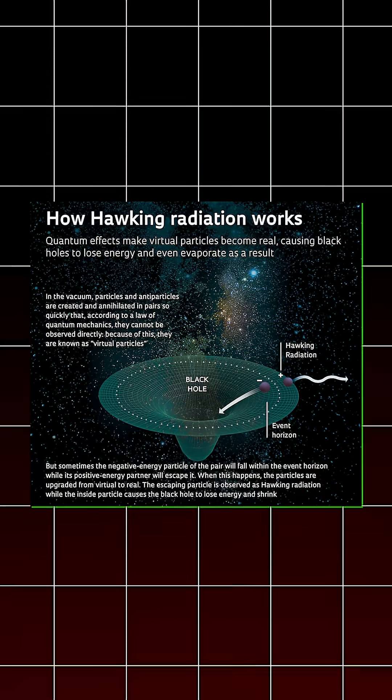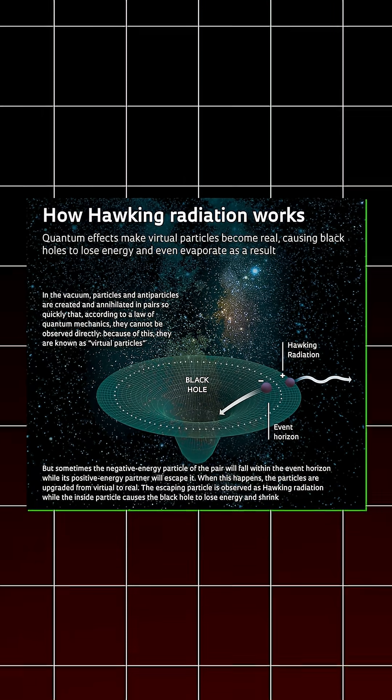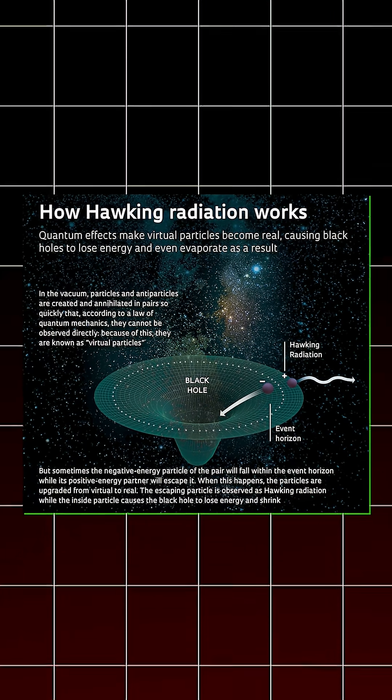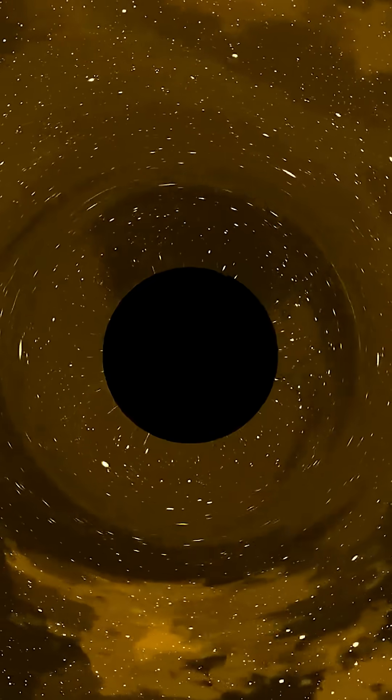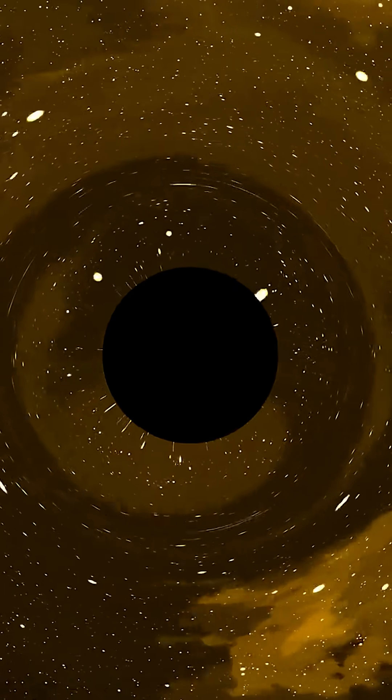Yeah, thanks to a genius named Stephen Hawking, we discovered they can slowly leak energy called Hawking radiation. This happens because right at the event horizon, pairs of particles constantly pop in and out of existence.